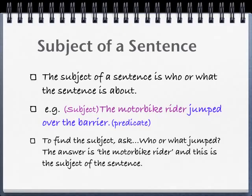Sometimes your child may be asked to find the subject and predicate of a sentence. The subject of a sentence is who or what the sentence is about. For example, take this sentence: 'The motorbike rider jumped over the barrier.' To find the subject, you ask who or what jumped — because jumped is the verb. The answer is the motorbike rider, and this is the subject of the sentence.